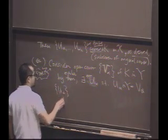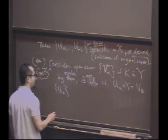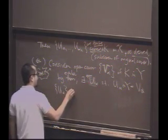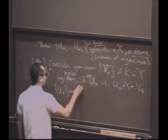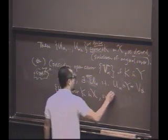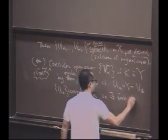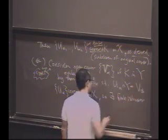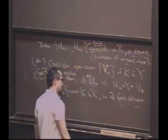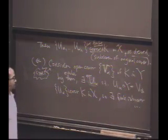U sub alpha, oh, I said I would just, I said I wouldn't write it, but I'm writing it. That's okay. These U sub alpha cover K in X. So there exists a finite subcover. Et cetera, et cetera.